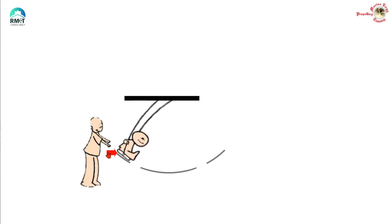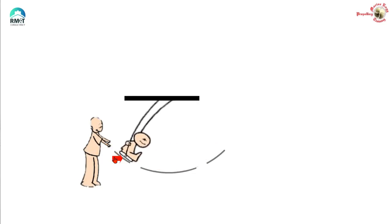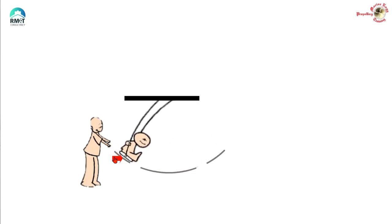You cannot transfer the energy you have to the swing because it is already having very good speed. And if you try to push the swing before it comes to the top position — for example, on its way up — you will in fact be opposing the movement and stopping the swing. This in fact forms the basis of combustion for a compression ignition engine.